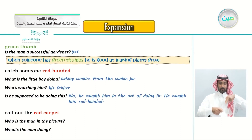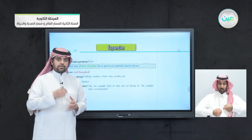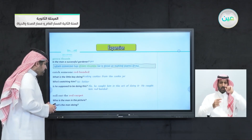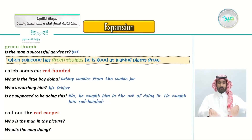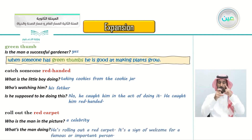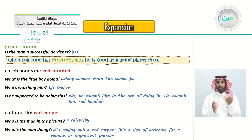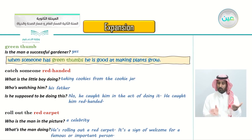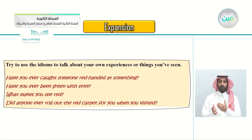Roll out the red carpet - you know the long red carpet they put for celebrities, or sometimes in front of restaurants. Who is the man in the picture? Maybe he is a celebrity. What is the man doing? He is rolling out a red carpet - it's a sign of welcome for a famous or important person. To roll out the red carpet means it's a sign of welcome for a famous or important person.